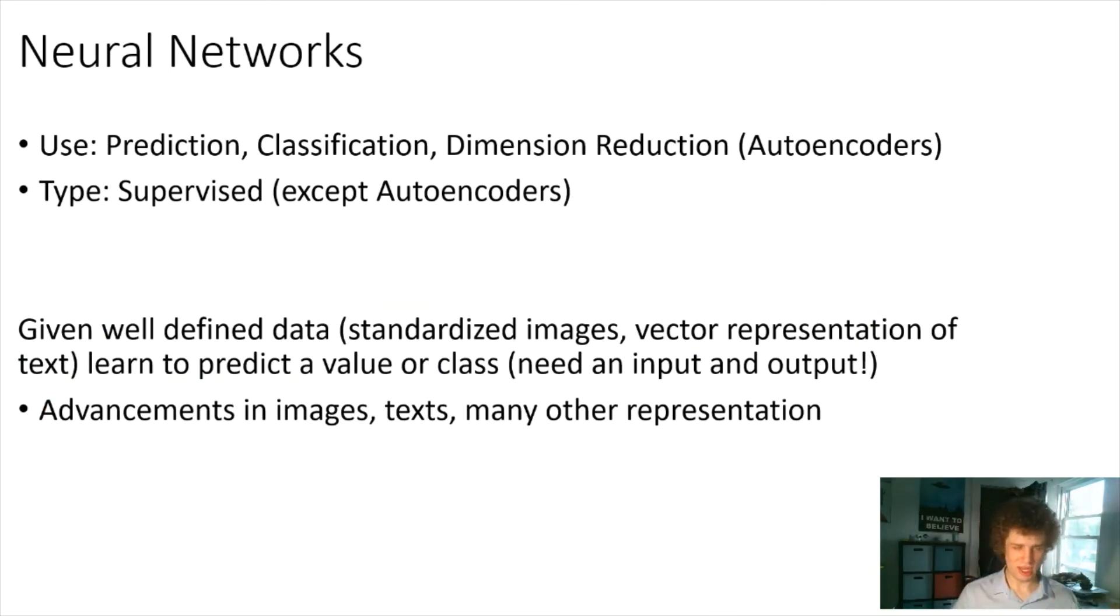Next is neural networks, a really fascinating field. These can be used for a lot of different reasons. For the CFA, if you see neural network, you should think prediction or classification. There are autoencoders which do dimension reduction and are unsupervised, but most other neural networks are supervised and they're either prediction or classification. Given really well-defined data like an image or text, you need to learn to predict a given value. That's part of the supervised procedure. You need to have that class to train these models.